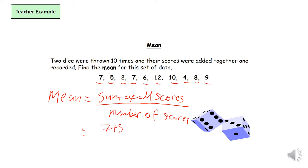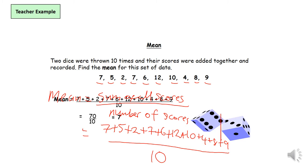plus five, plus two, plus seven, plus six, plus twelve, plus ten, plus four, plus eight, plus nine. We're gonna add them all up and we're gonna divide it by the number of scores. Again we have ten scores so I'm gonna divide it by ten.